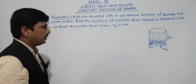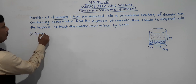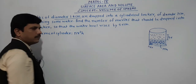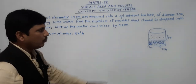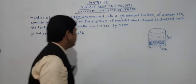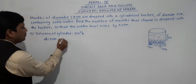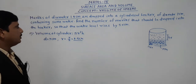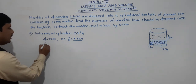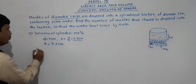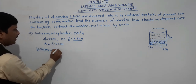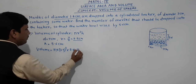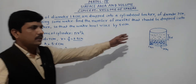Volume of cylinder equals π r² h. Diameter of the beaker is 7 centimeters, so radius is 7/2 = 3.5 centimeters. Height is 5.6 centimeters. So volume equals π × 3.5² × 5.6. Now we find the volume of a marble. Diameter of marble is 1.4 centimeters, so radius R equals 1.4/2 = 0.7 centimeters.